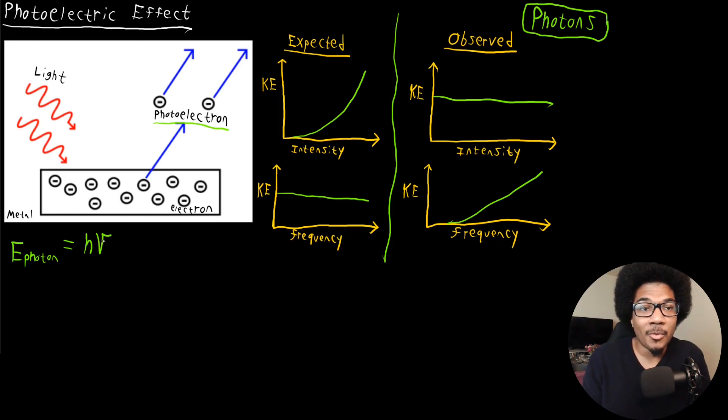Albert Einstein put forward that the energy of a photon would depend on the frequency of the radiation and not the intensity. And obviously, this h is the same Planck's constant that we looked at in the previous video.